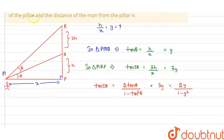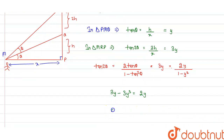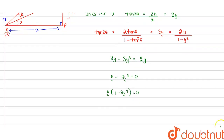Cross-multiplying, we get 3y minus 3y³ equals 2y, which simplifies to y minus 3y³ equals 0, or 3y³ equals 0. Taking y common, we get y(1 minus 3y²) equals 0, giving y equals 0 or y equals 1 upon root 3.